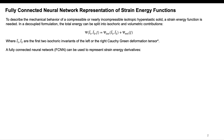To describe the mechanical behavior of a compressible or nearly incompressible isotropic hyperelastic material, a strain energy function is needed. In a decoupled formulation, the total energy can be split into an isochoric and a volumetric contribution, where I1 bar and I2 bar are the first two isochoric invariants of the left or right Cauchy-Green deformation tensor, and J is the determinant of the deformation gradient. If you are not familiar with hyperelasticity or would like to know more, this is a good reference to consult.